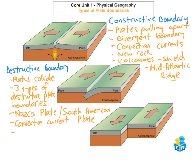At destructive plate boundaries, when you have oceanic and oceanic colliding, or continental and oceanic, you get what we call a subduction zone. This is when one plate is forced to go down underneath the other plate. As it subducts, it starts to melt because of the great pressure and heat.